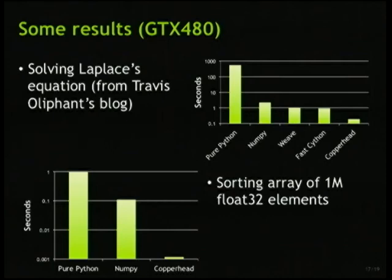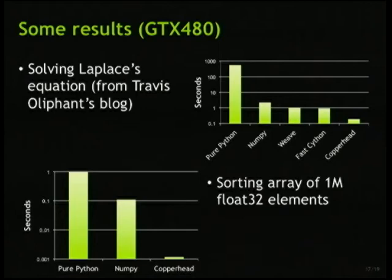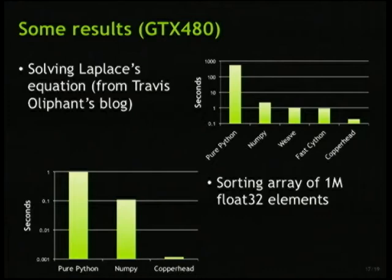Just to give you a teaser of some results: I went to Travis Oliphant's blog and he had a post about speeding up Python with Laplace's equation. I ran that in Copperhead and it was pretty fast — about five times faster than Cython running on my GTX 480, which is a GPU from about two years ago. Sorting is really fast — we get around 800 million 32-bit keys per second on a GTX 480, which is really useful for a lot of algorithms.